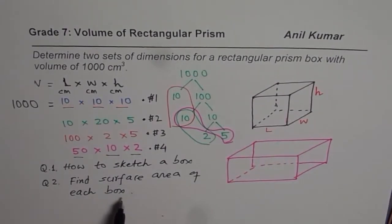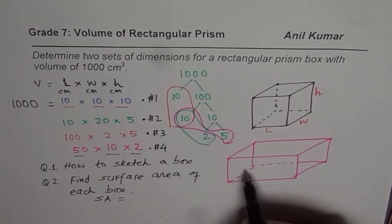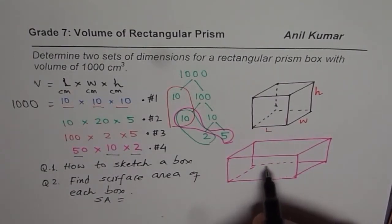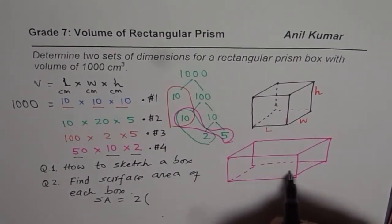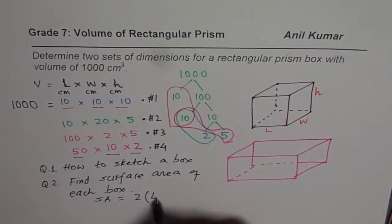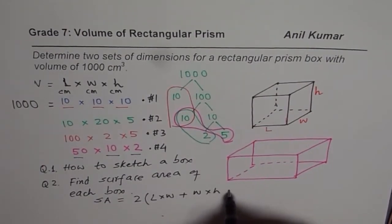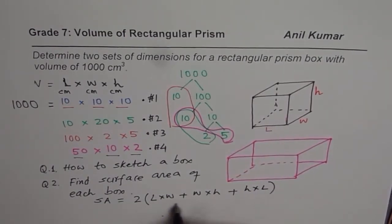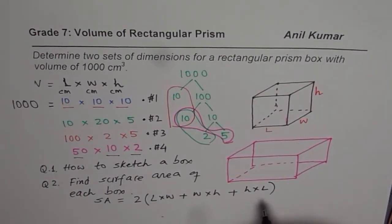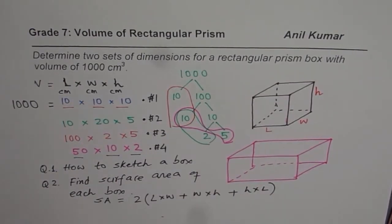Surface area is equals to, it has two faces of each kind. So it is two times area of each face. Each is rectangle. So length times width plus width times height plus height times length. So that is how you get the surface area. You can use calculator, find surface area of each and then figure out which area is minimum.